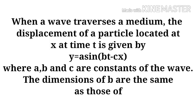When a wave traverses a medium, the displacement of a particle located at x at time t is given by A Sine Bt minus Cx, where A, B, C are constants of the wave.